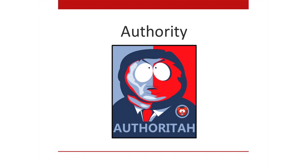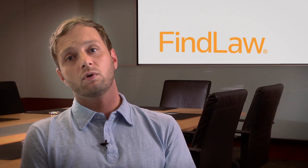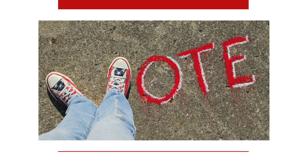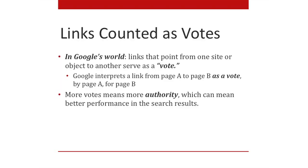Let's talk about authority. Authority is being able to use your position of influence or knowledge to influence others. What authority means to Google is that a site is trusted. Trusted sites tend to provide searchers with more info and value. How does anyone win a popularity contest? You have to vote. The way Google calculates votes is through links — links that point from one site to another serve as a vote. More votes means more authority, which can mean better performance in search results.